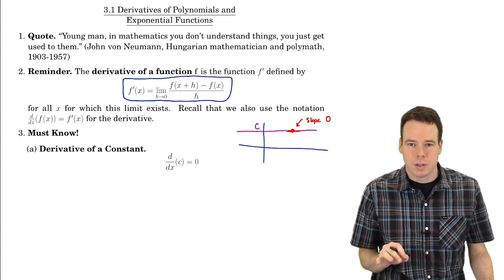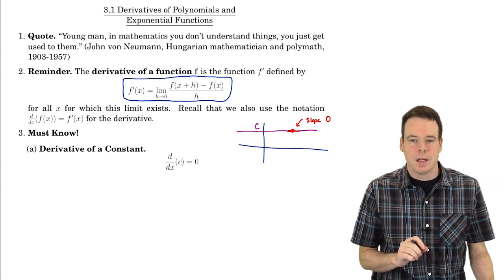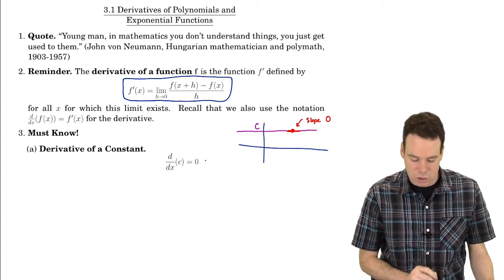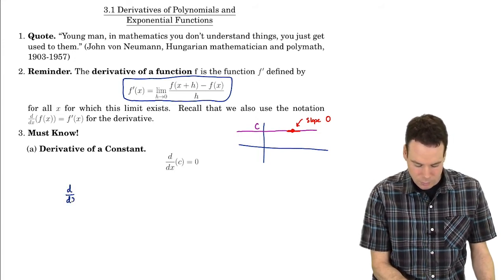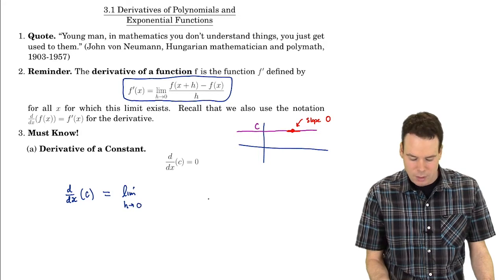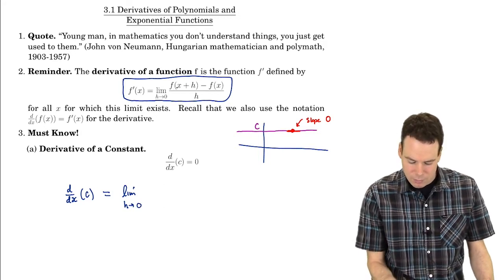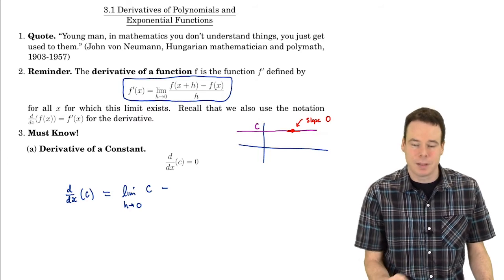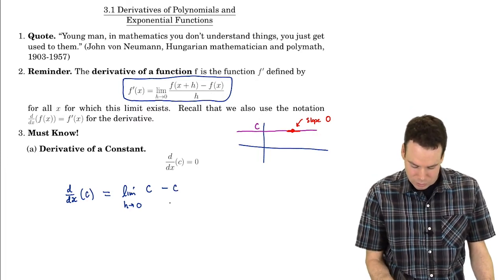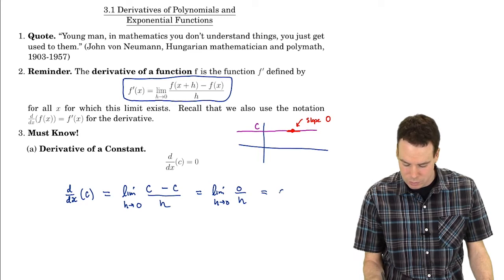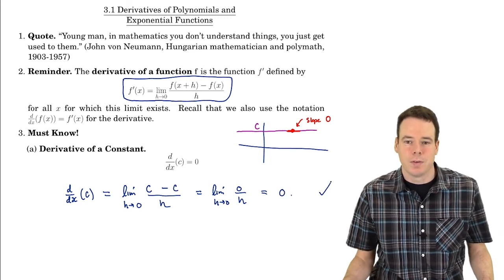However, we need to solidify all these results based on the definition of derivative. So here's the definition of derivative in terms of the limit. Let's verify that the derivative of a constant function is really zero. The derivative is the limit as h goes to zero of f(x+h) minus f(x), all over h. But f(x+h) is just c, since f is a constant function, and f(x) is also c. So the numerator is c minus c, which is zero. Zero over h is always zero, so the limit as h goes to zero is also zero. We've verified this from the definition of derivative.